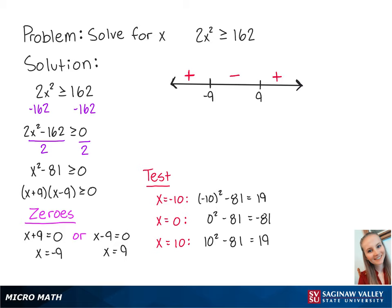To make the inequality a true statement, the left side must be greater than or equal to 0. This means that x must be less than or equal to -9 or greater than or equal to 9. So x ranges from negative infinity (exclusive) to -9 (inclusive), or 9 (inclusive) to positive infinity (exclusive). And this is the final answer.